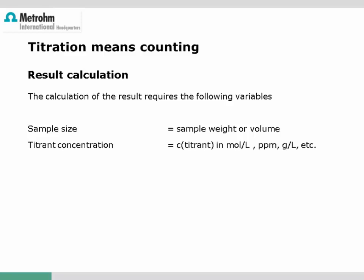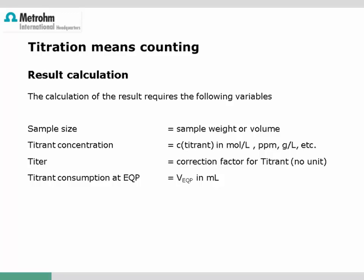Since titration means counting, we also need to know the exact concentration of the titrant solution. The concentration can be expressed in various units — very popular ones are moles per liter, parts per million (ppm), or grams per liter. Since the titrant concentration may differ from the nominal concentration, this has to be corrected with a factor, the so-called titer. We also need to know the volume of titrant consumed up to the equivalence point, provided by reading the burette or directly delivered by the titration instrument.